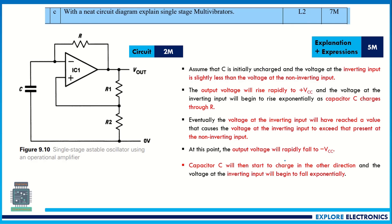The next question asks to explain single-stage multivibrators with a neat circuit diagram, also for 7 marks. This is similar to the single-stage astable oscillator asked in the previous question. You can write the same astable oscillator circuit, the explanation, and the waveform. If you know any additional explanation related to single-stage multivibrators, include that as well. This covers Module 2.